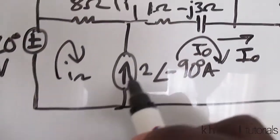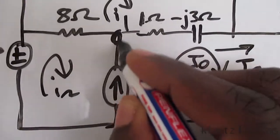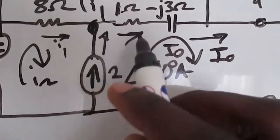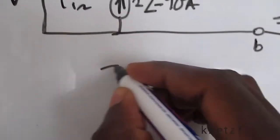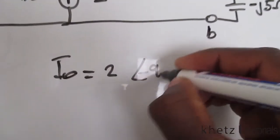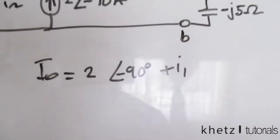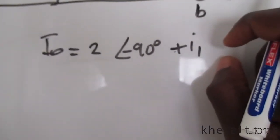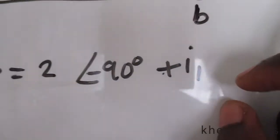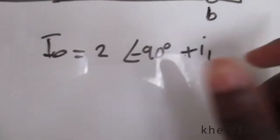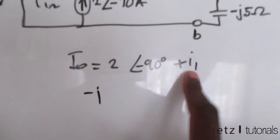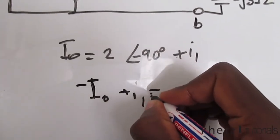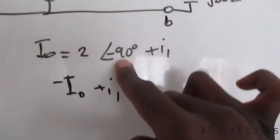Let's form the relationship between the current source and the two mesh currents. Looking at this node up here, this one is going in, this one is going in, and that one's going out, which means the sum of these two equals that one. Therefore IO equals 2∠θ plus I1. That is our first relationship. We can rearrange so the variables are on one side and constants on the other: negative IO plus I1 equals the constant from the source.